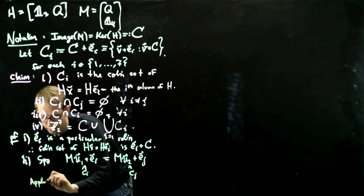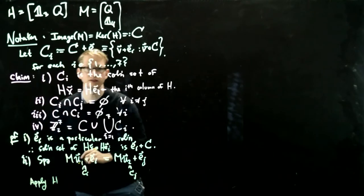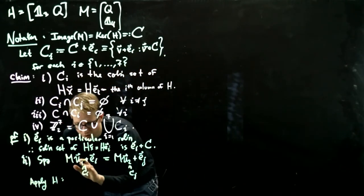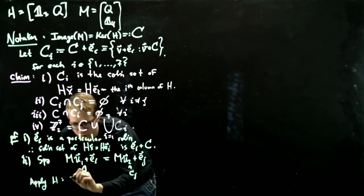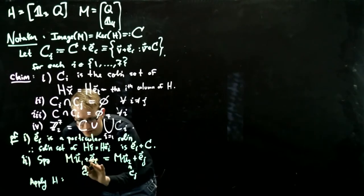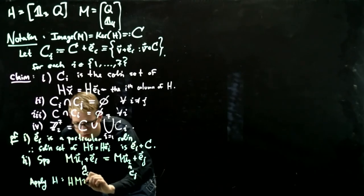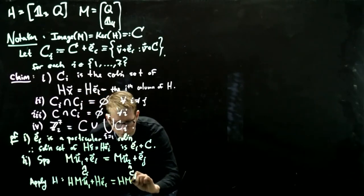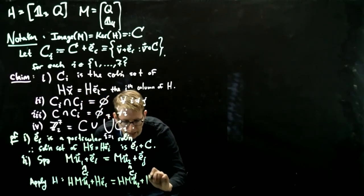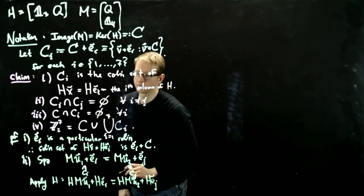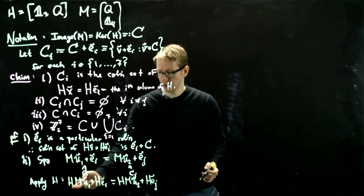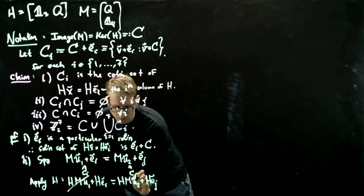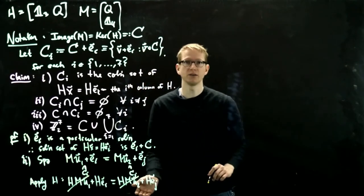Now, apply H to this equality, what happens? Well, because these functions are linear, and we apply H to both, on the left-hand side, this becomes HMU_1 plus HE_i equals HMU_2 plus HE_j. And HM of U_1 is zero, because HM is the zero matrix, so this is zero, that's zero, and we're left with HE_i equals HE_j.